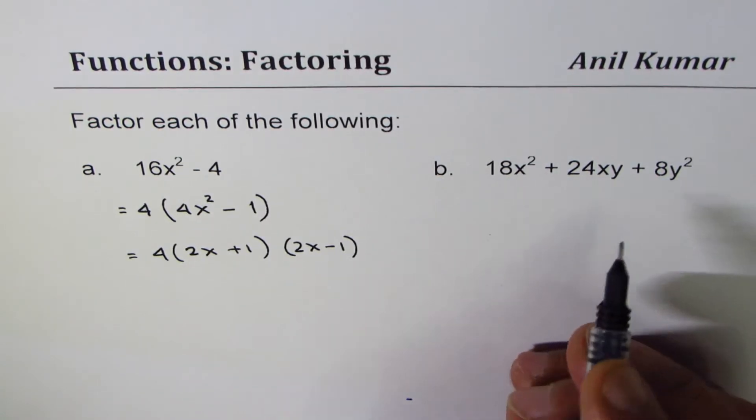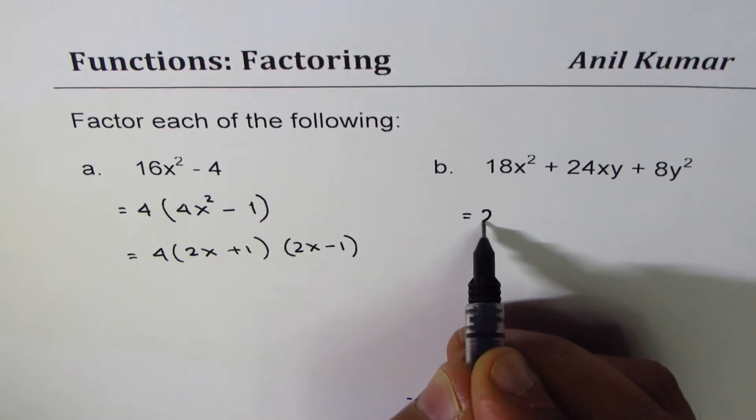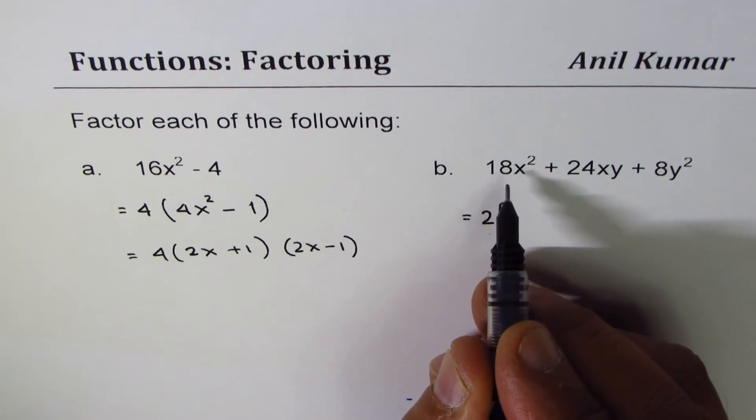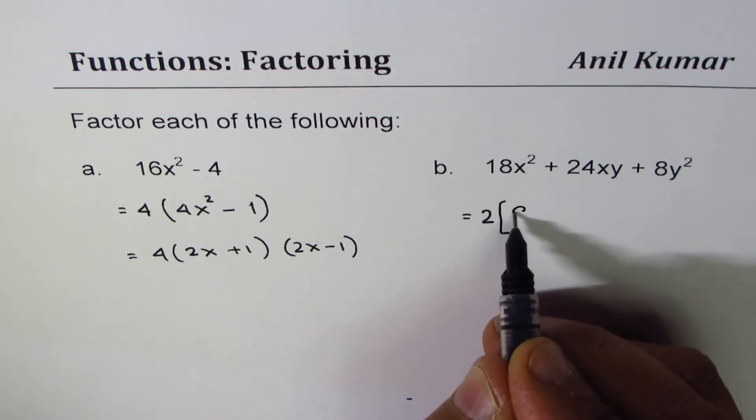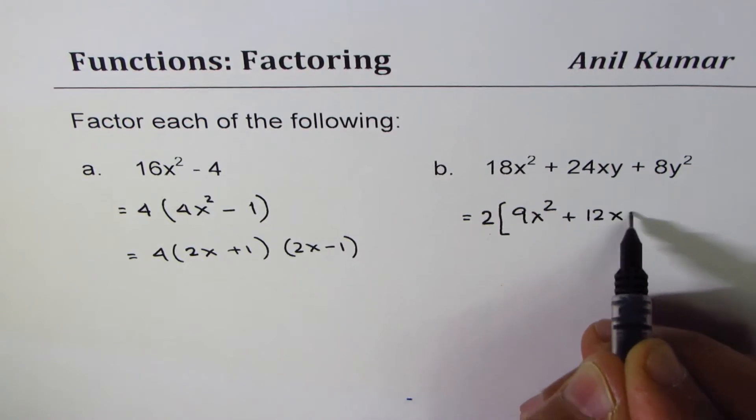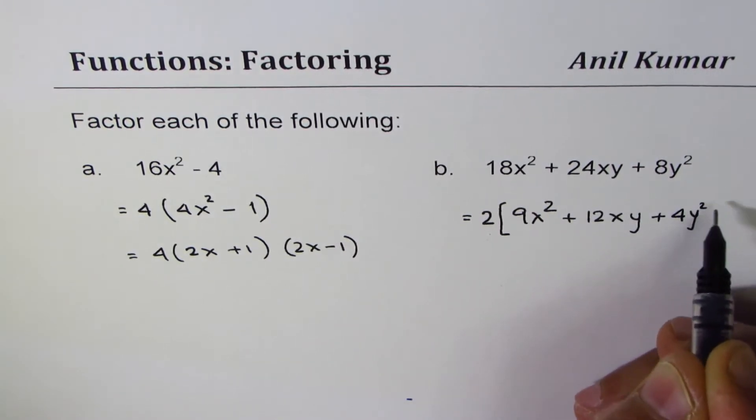2 is a common factor. So first step, let's do group factoring: 2. Dividing each term by 2 we get 9x² + 12xy + 4y².